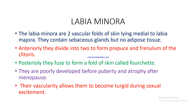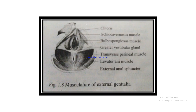Labia minora: these are two vascular folds of skin lying medial to the labia majora. They contain sebaceous glands but no adipose tissue. Anteriorly, they divide into two to form the prepuce and frenulum of the clitoris. Posteriorly, they fuse to form a fold of skin called the fourchette. They are poorly developed before puberty and atrophy after the menopause. Their vascularity allows them to become engorged during sexual excitement.